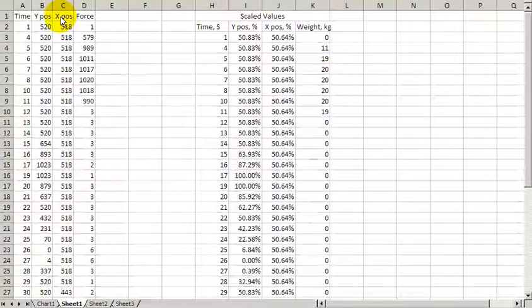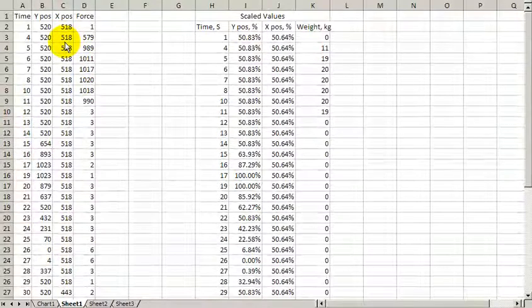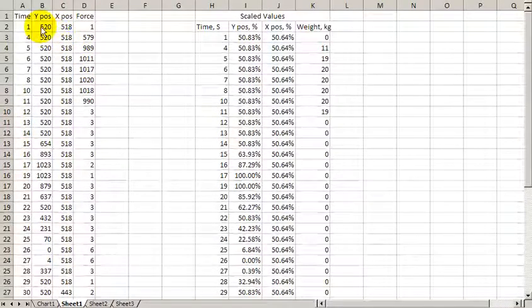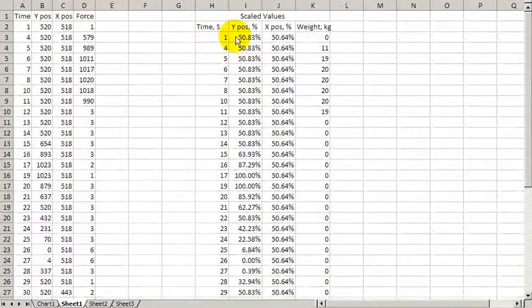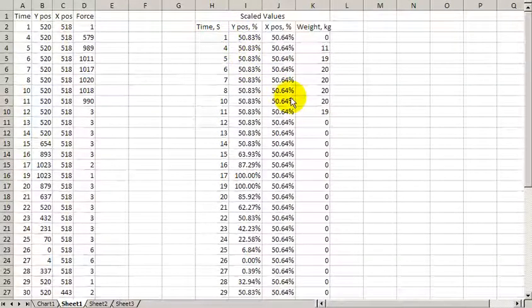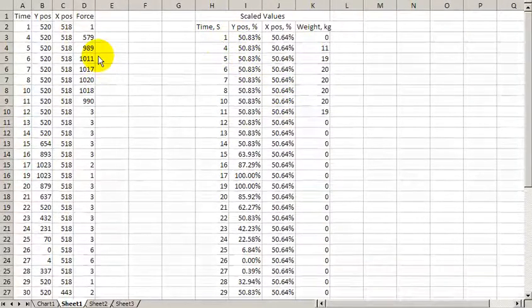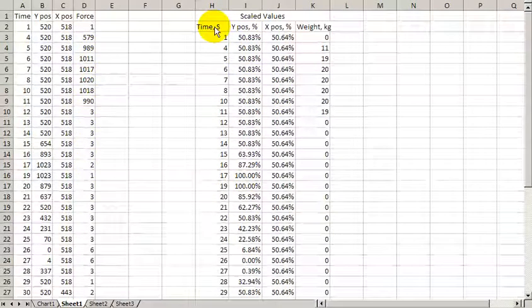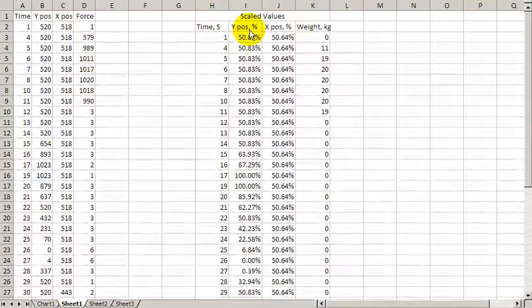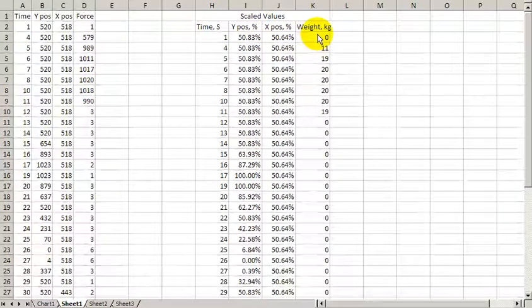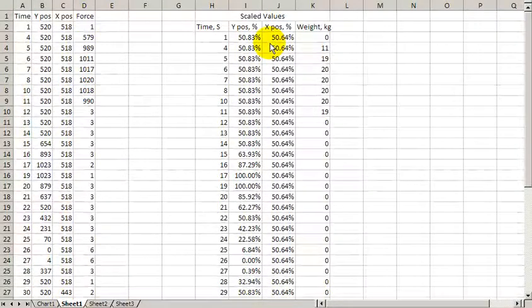What we did next was take the file data from the data logger memory card and bring it into this Excel spreadsheet. It was post-processed. That is, we did some scaling here to change the raw data that was scaled 0 to 1023. We scaled that to represent seconds, percent of joystick position, and weight in kilograms. We took the force sensor's force and converted that to weight.